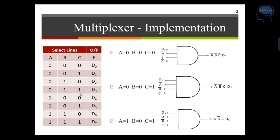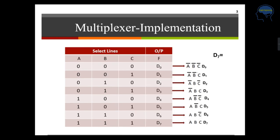So when select line 0, 1, 1 is chosen, the output will be A-bar · B · C · D3. This is how the multiplexer works. To summarize: D0 output is A-bar·B-bar·C-bar·D0; D1 is A-bar·B-bar·C·D1; D2 is A-bar·B·C-bar·D2; and D3 is A-bar·B·C·D3. This is how the input data lines are transferred to the output.